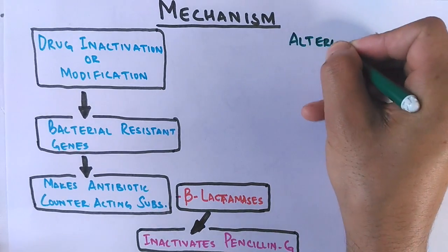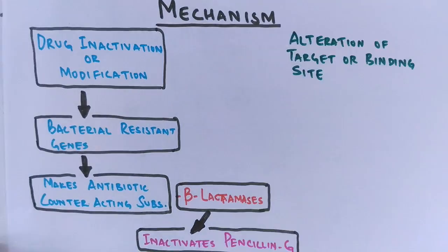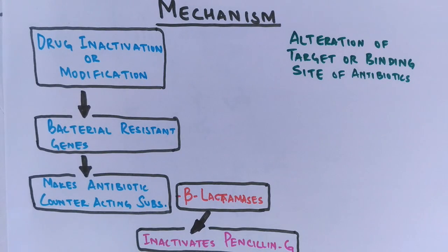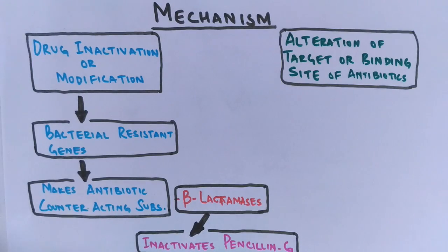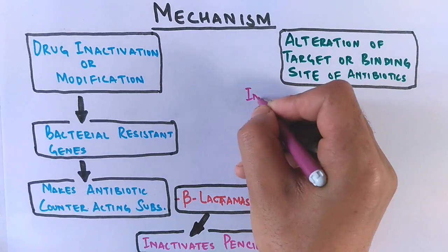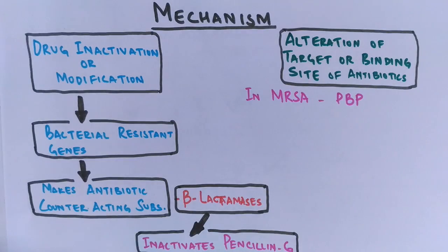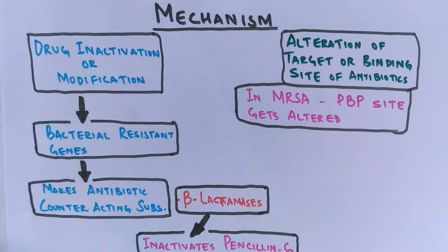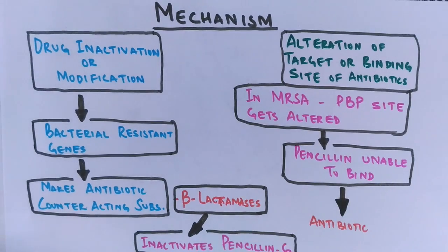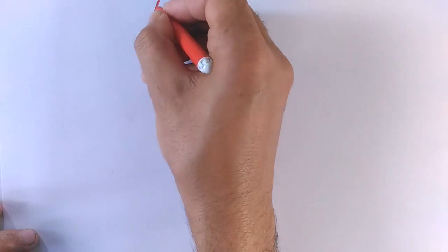The second mechanism is alteration of the target or binding site of antibiotics. In this mechanism, the target site of antibiotics is altered so that antibiotics cannot affect the bacteria — the antibiotics are left without a site to bind to. This condition has been seen in methicillin-resistant Staphylococcus aureus (MRSA), where the PBP — penicillin binding protein — gets altered and antibiotics are unable to bind to it, resulting in antibiotic resistance.